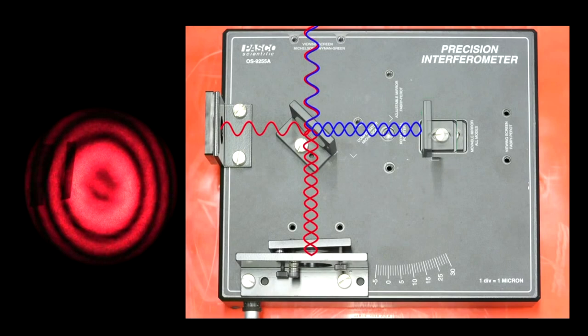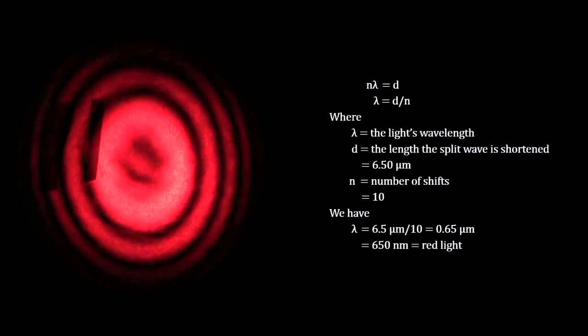As we continue to shorten the path for the split wave, we can count the number of fringe shifts. In our experiment, we shortened the wave by 65 micrometers and produced 10 fringe shifts. A simple division gives us the wavelength. So knowing the distance and counting the shifts gives us the wavelength.